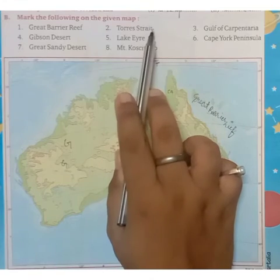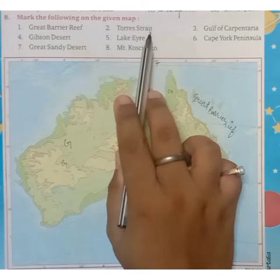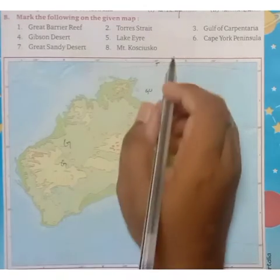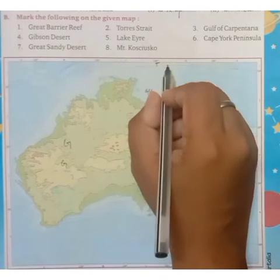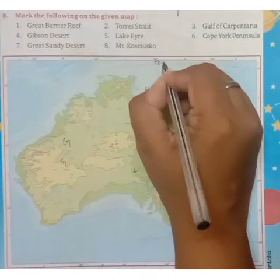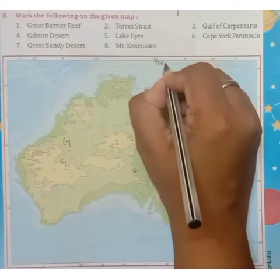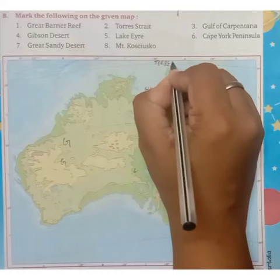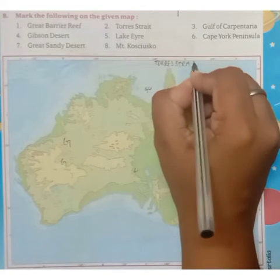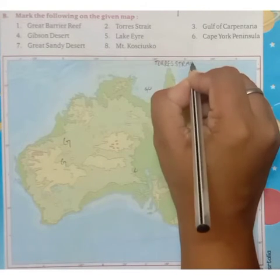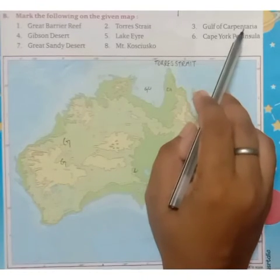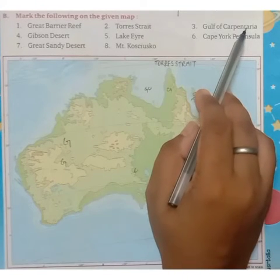Next is Torres Strait. Torres Strait is located here — you will mark Torres Strait on the map. Next is Gulf of Carpentaria.